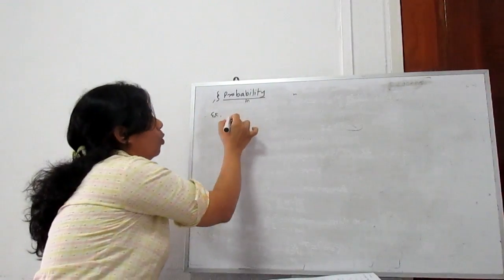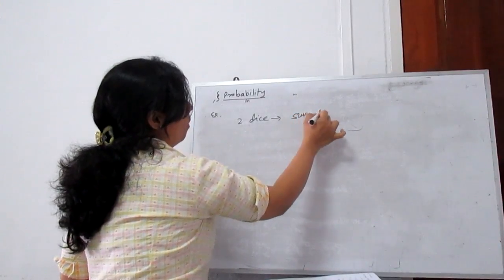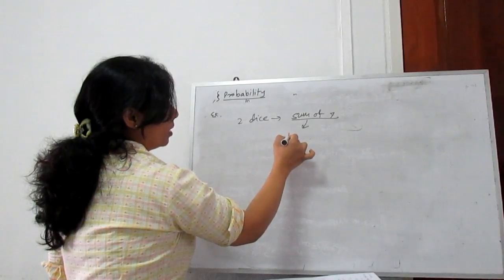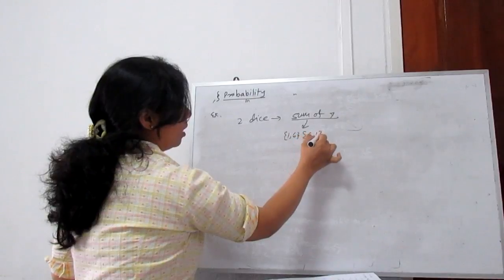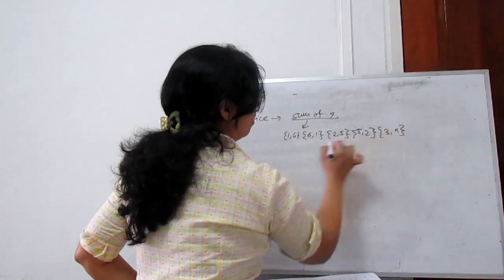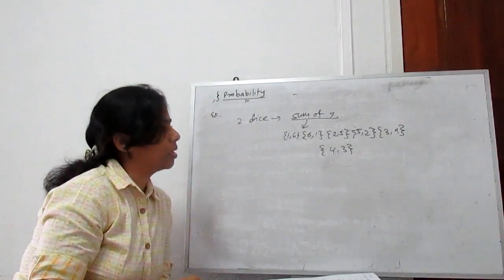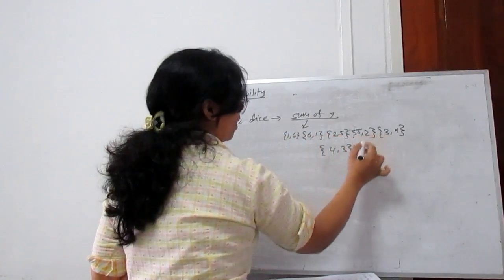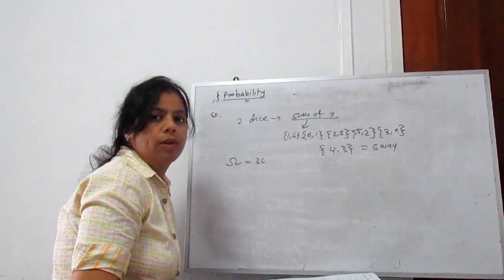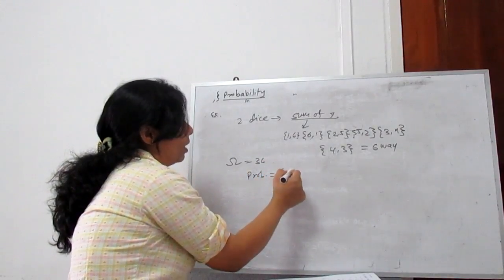If we have 2 dice tossing at the same time, what is the probability to get a sum of 7? For getting 7, the ways are: 1+6, 6+1, 2+5, 5+2, 3+4, and 4+3 — no other combination gives a sum of 7 from 2 dice. So there are 6 ways. Total outcome, our sample space, is 36. So probability to get sum of 7 is 6 by 36, which is 1 by 6.